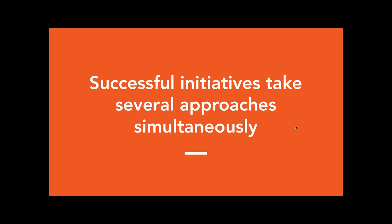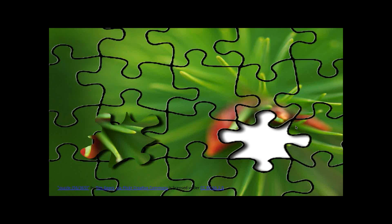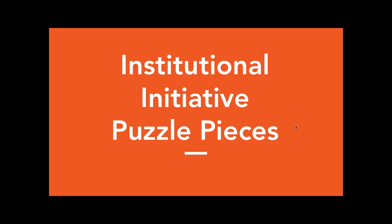Those are the bare bones things you need to do. But here's what I'll also tell you: successful initiatives take several approaches simultaneously. Often I'll call a school and they name one thing they're doing for their OER initiative. In reality, it's more like a puzzle — each part of your initiative is one puzzle piece, and you need to bring a lot of different puzzle pieces together to make it work. I call these the institutional initiative puzzle pieces, and I recommend no less than eight different types of approaches.